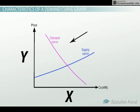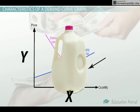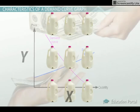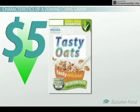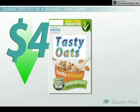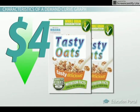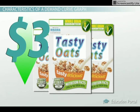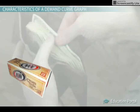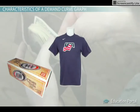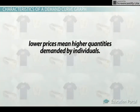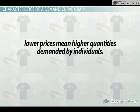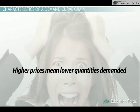Just like in macroeconomics, demand curves slope downward because people are willing to buy larger quantities of a good as its price goes down. For example, you may only be willing to buy one box of cereal when it sells for $5 a box. When it sells for $4, you may be willing to buy two boxes. And when it sells for $3, you may be willing to buy three boxes. The same logic and rationale can be applied to 12 packs of soda, clothing, or movie theater tickets you may purchase in a given week. To sum up, lower prices means higher quantities demanded by individuals. Higher prices means lower quantities demanded.